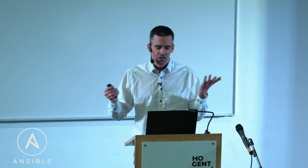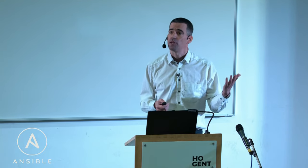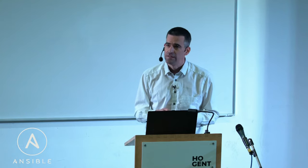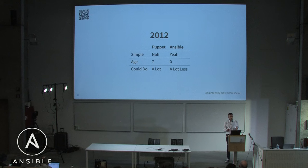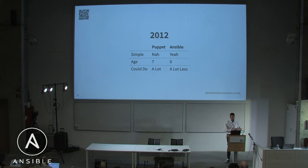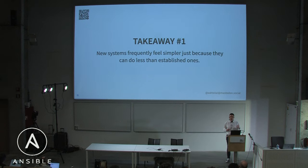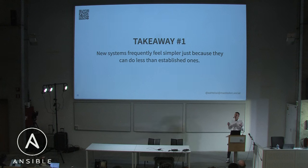There were others — Chef, CFEngine — but you could argue Puppet was the incumbent, and it had been around since 2005. So if you compare the two projects in 2012, yes, Ansible was simpler than Puppet, but only because there was a lot of things you could do with Puppet that you couldn't do with Ansible at the time. New systems frequently feel simpler than established ones simply because you can do a lot less with the new thing. For about 90% of software projects, you can design a replacement in six weeks, put out an initial release in six months, and spend six years ironing out edge cases and corner cases.